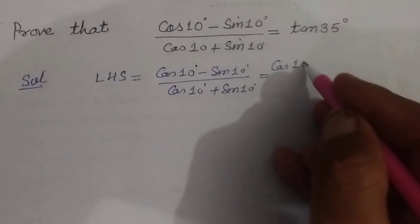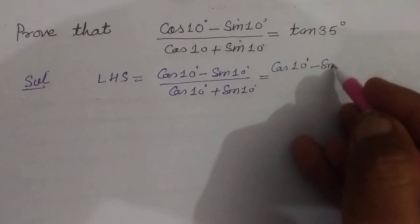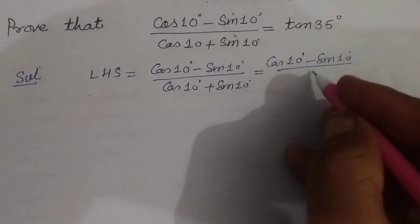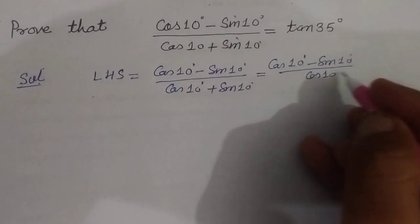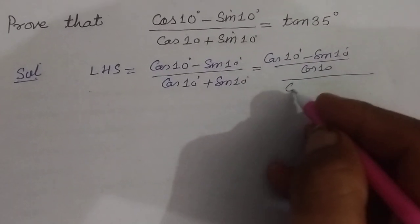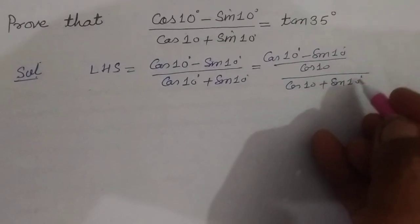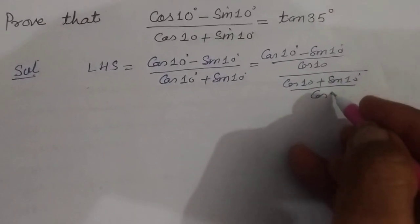Now cos 10 minus sin 10, we divide this by cos 10, and also cos 10 plus sin 10 divided by cos 10.